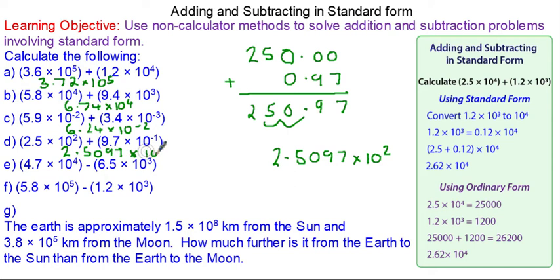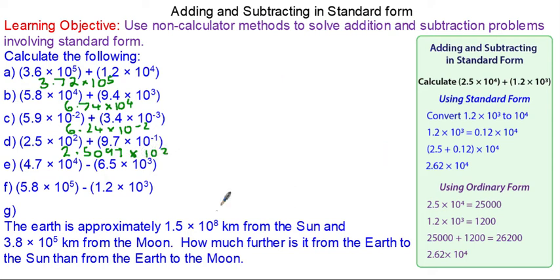For question e, 4.7 × 10⁴ is 47,000. Now we're going to subtract 6.5 × 10³, which is 6,500.